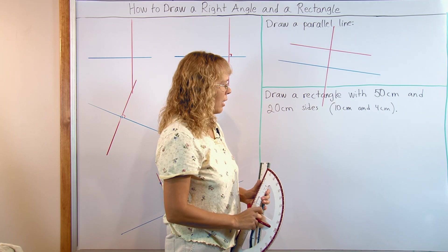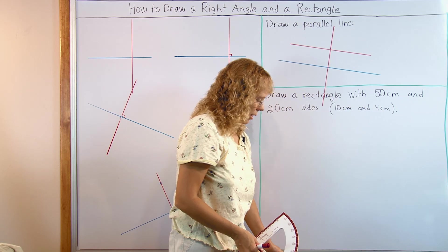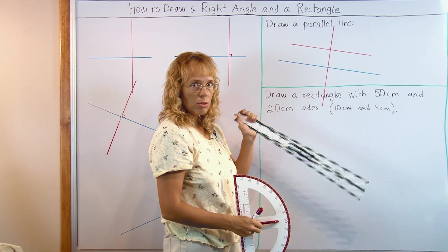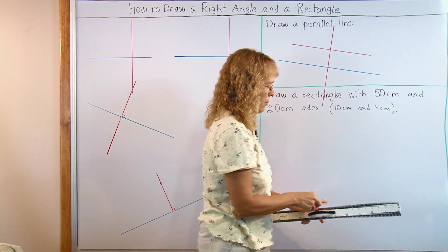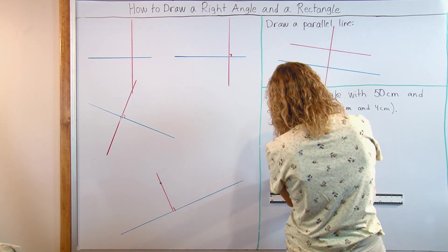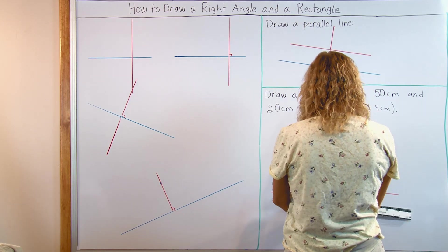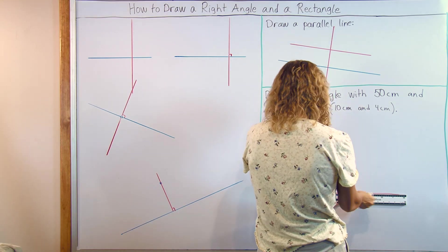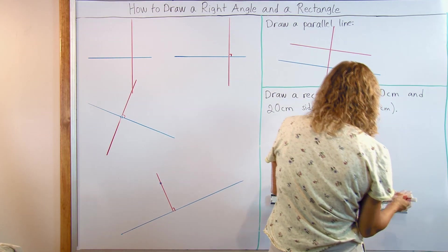Now we will start out by drawing first the one side of the rectangle. I need this for drawing the right angles and then a normal ruler for drawing longer lines. So let's draw first a line. Then I need to measure on it 50 centimeters. Here and here.